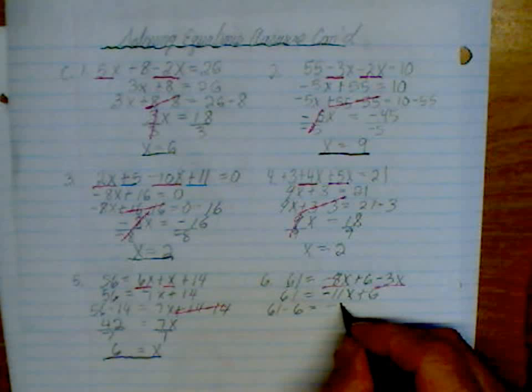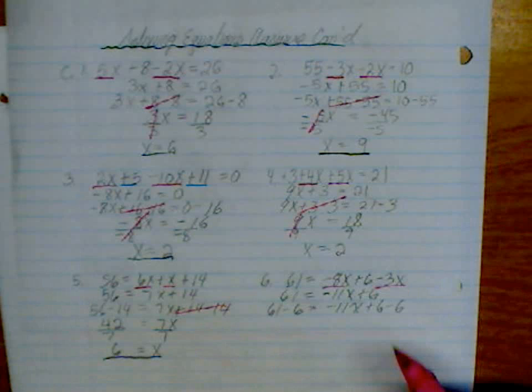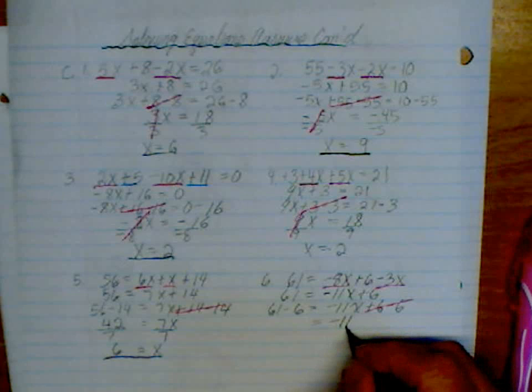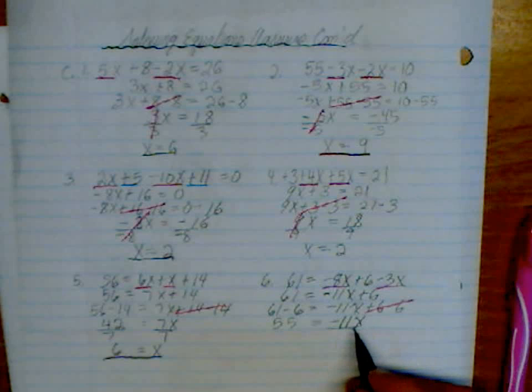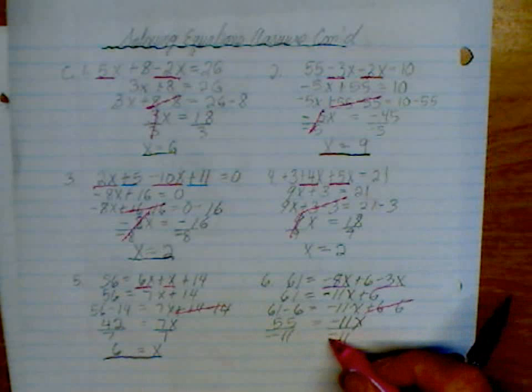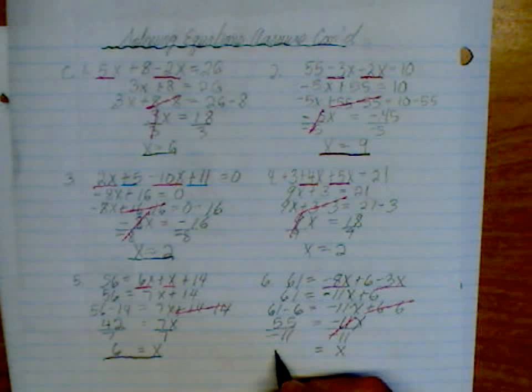61 less 6 is equal to negative 11x. This will stay negative for a minute. And that's going to give us 55. And now we just need to divide by a negative 11. So that's going to be equal to our positive x. But this will be a negative 5. And that's that lot.